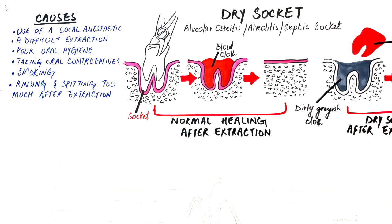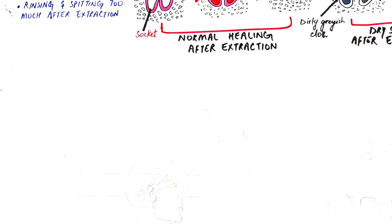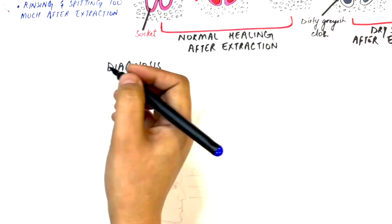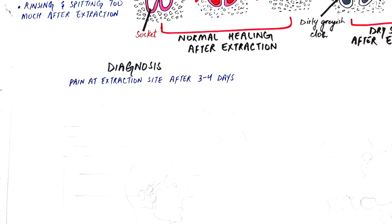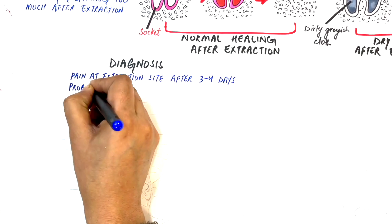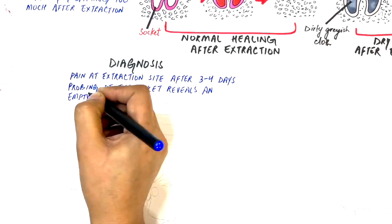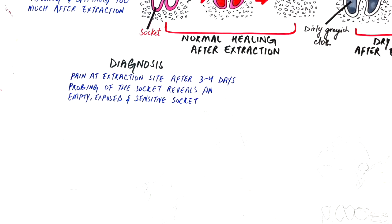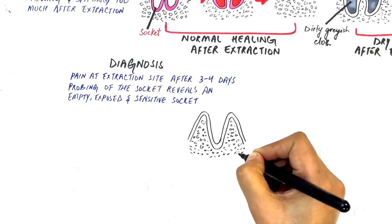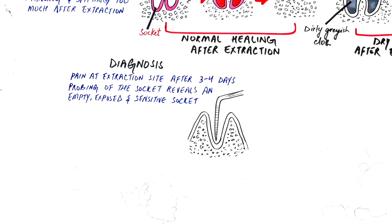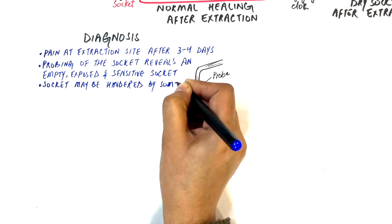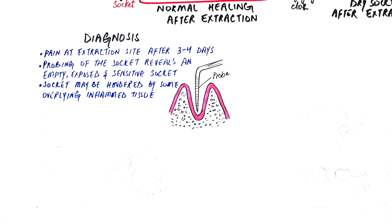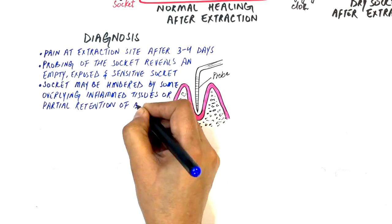Coming to the diagnosis, the patient starts experiencing pain at the extraction site three to four days following extraction. The diagnosis of dry socket is done by probing the socket, which reveals an empty, exposed and extremely sensitive bone. This sensitive and empty socket might be hindered with some overlying inflamed soft tissues or partial retention of the blood clot.